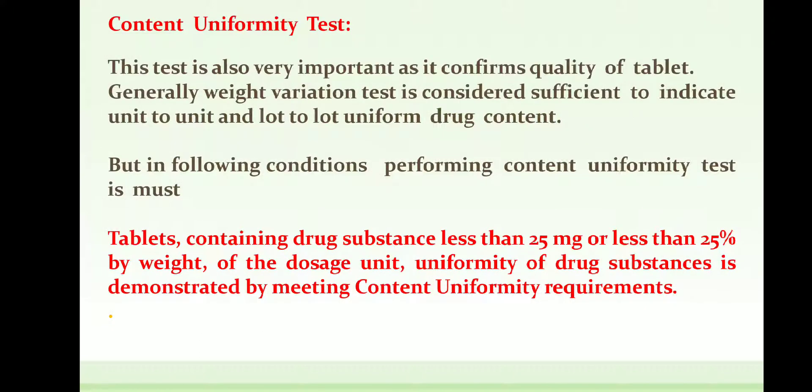The content uniformity test is also very important and confirms the quality of the tablet. Generally, the weight variation test is considered sufficient to indicate uniformity of drug content. However, the content uniformity test is compulsory when the tablet contains a drug substance less than 25 mg or less than 25% of the total tablet weight, as uniformity of drug substance must then be demonstrated by meeting content uniformity requirements.